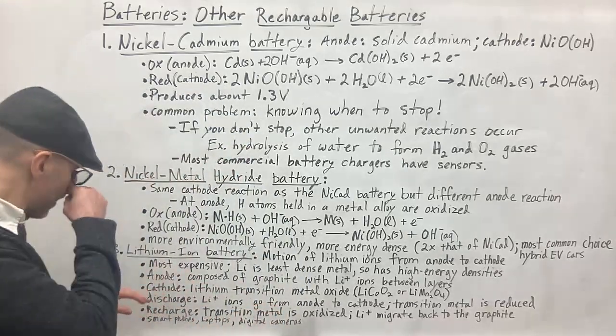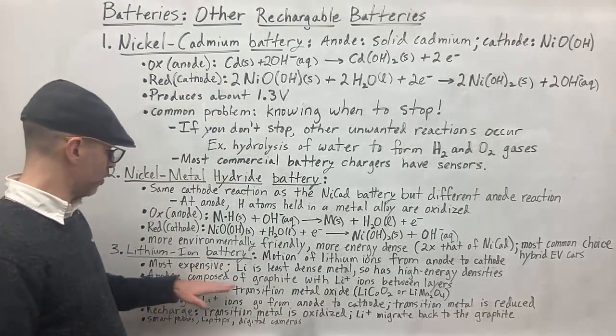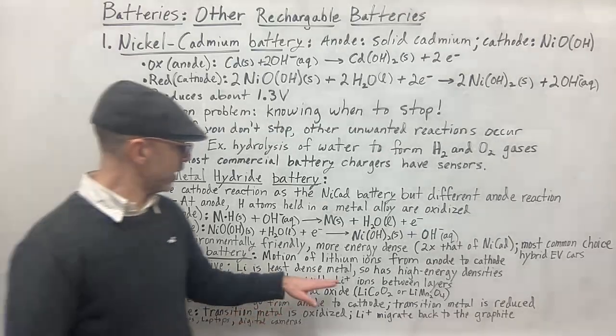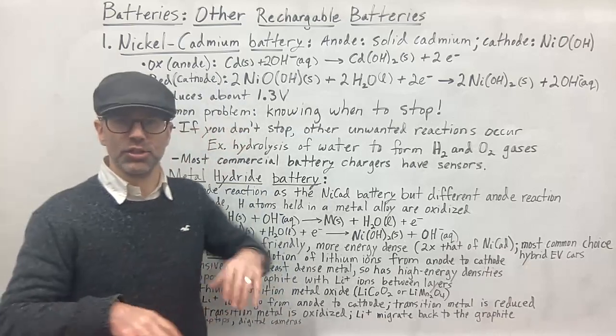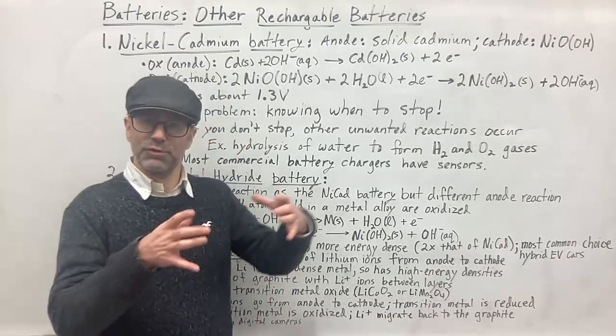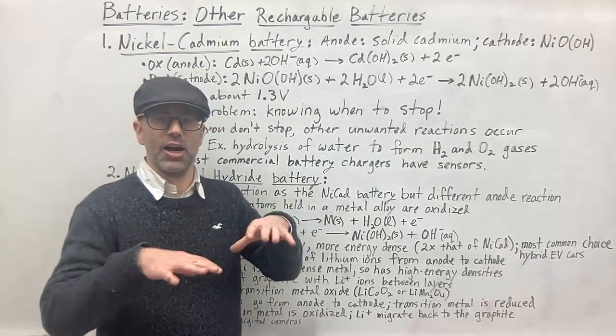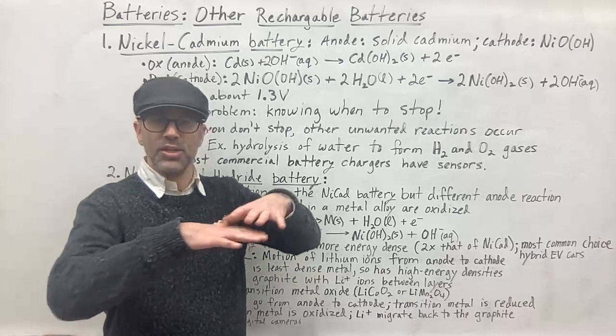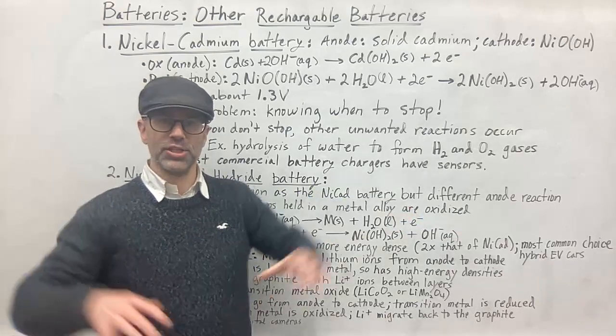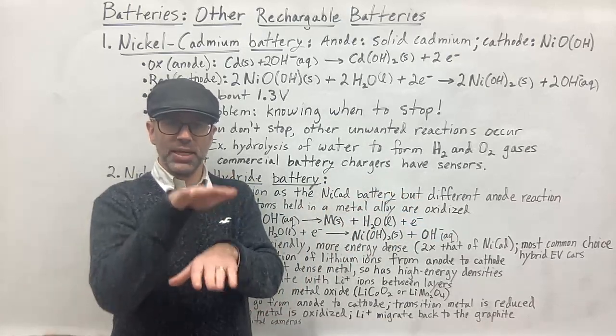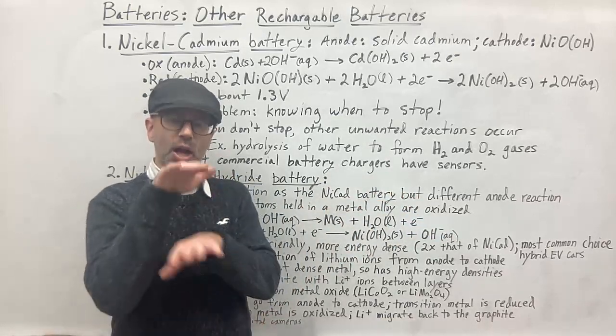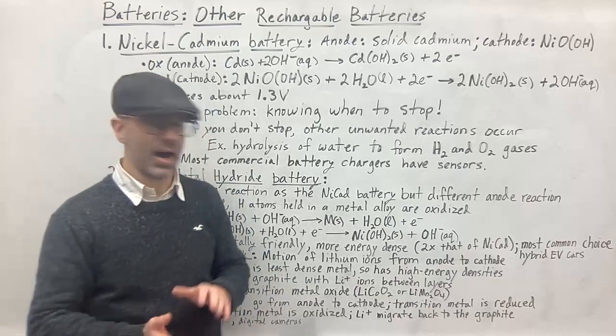These batteries work by the motion of lithium ions from the anode to the cathode. So these guys have a different structure or different way of working than the ones we've covered so far. So what happens is you have an anode. The anode is composed of graphite with lithium ions in between the layers. So if you remember graphite, the structure of graphite is you have these kind of chicken wire structure of your carbon. So you got like a wire mesh of carbon. And then those are going to be layered. So one on top of the other. Between the layers, you have your lithium ions.